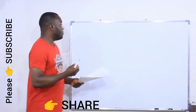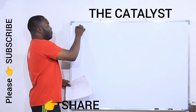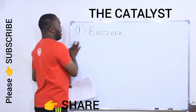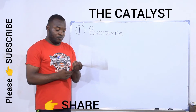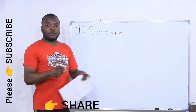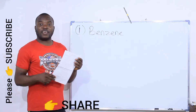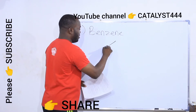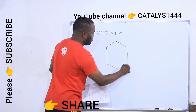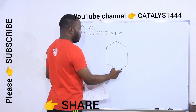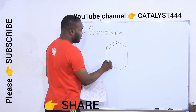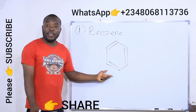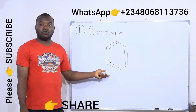Let's quickly look at that. The first one says we should draw the structure of benzene. Benzene is an aromatic compound with a six-membered cyclic carbon ring. The structure of benzene has six carbon atoms with alternating double bonds in three places. This is the structure for benzene.